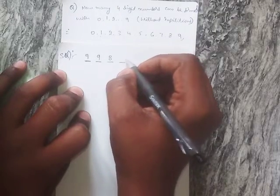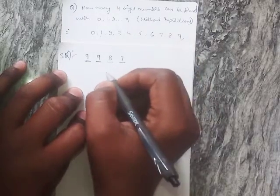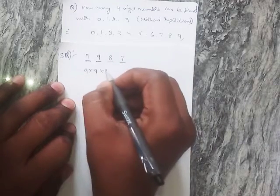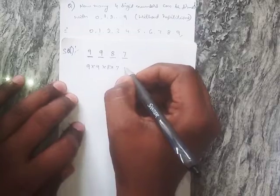Likewise, the fourth digit possibilities is seven. That is 9 × 9 × 8 × 7 possibilities.